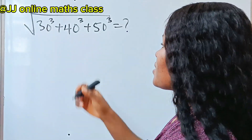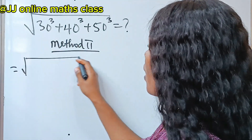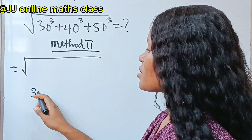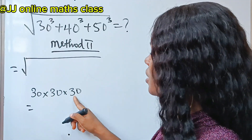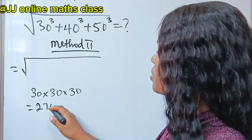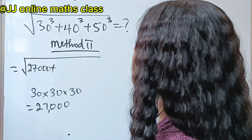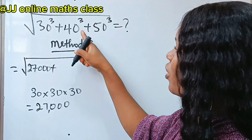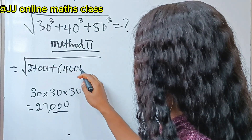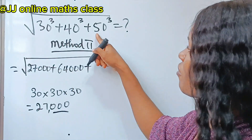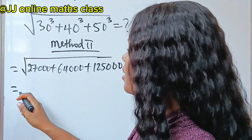Now let's go to method 2. This is equal to the square root of — 30 to the power of 3 means 30 times 30 times 30: 3 times 3 times 3 gives 27, with three zeros, so that is 27,000. Similarly, 40 times 40 times 40 gives three zeros and 4 to the power of 3 which is 64, so 64,000. Plus 5 to the power of 3 is 125, giving 125,000.